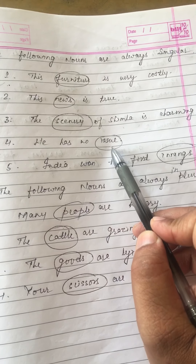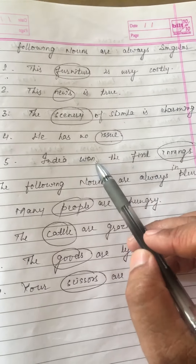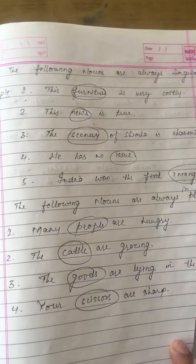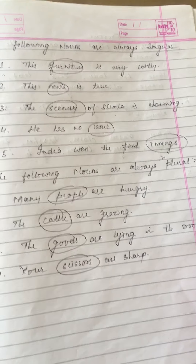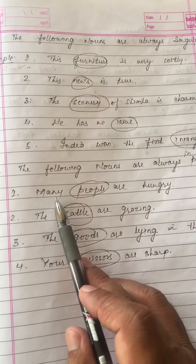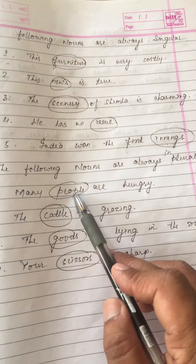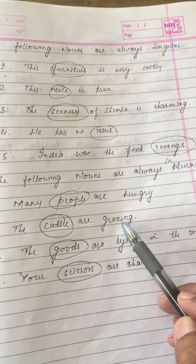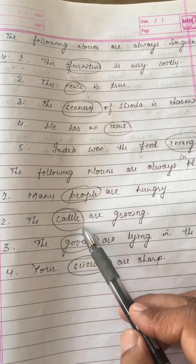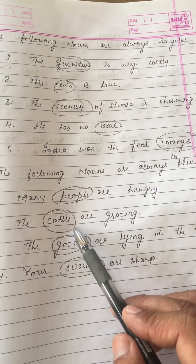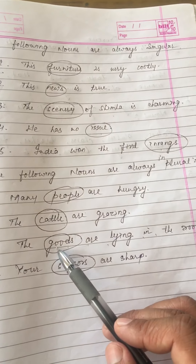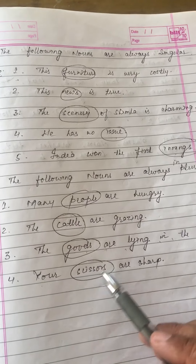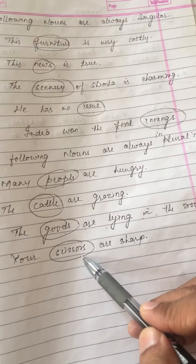'He has no issue' — issue is also used in singular form. 'India won the first innings' — innings is also used as singular. Now the last rule: some nouns are always used in the plural form — 'Many people are hungry' (people), 'The cattle are grazing' (cattle), 'The goods are lying in the room' (goods), 'The scissors are sharp' (scissors).